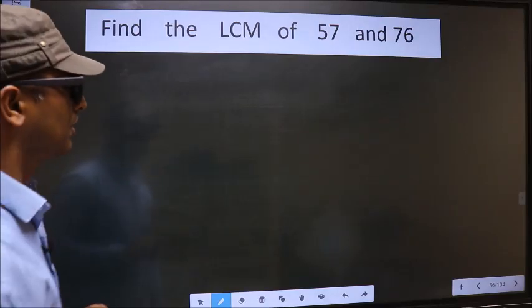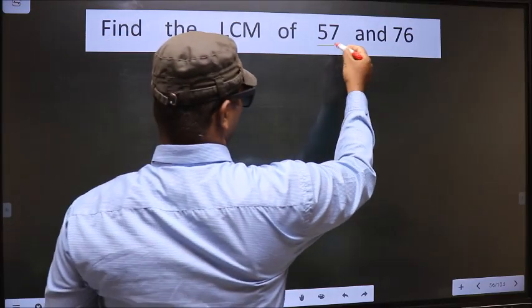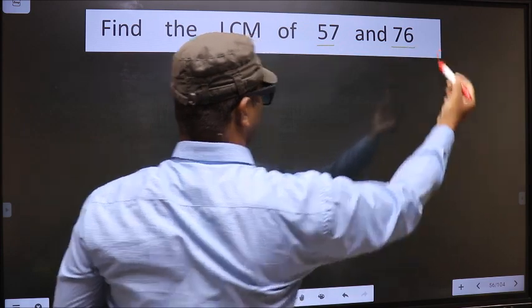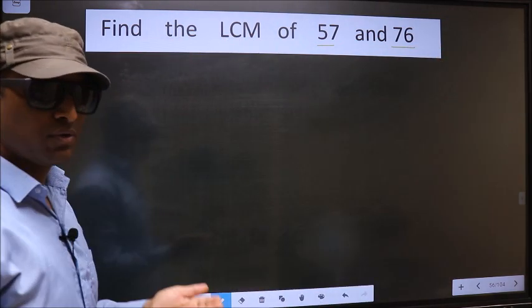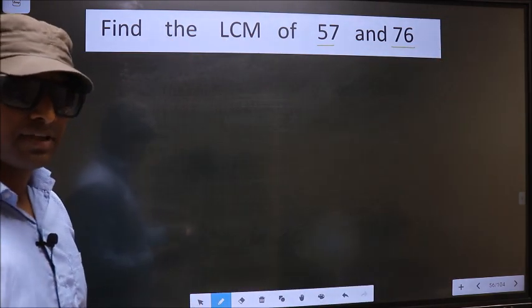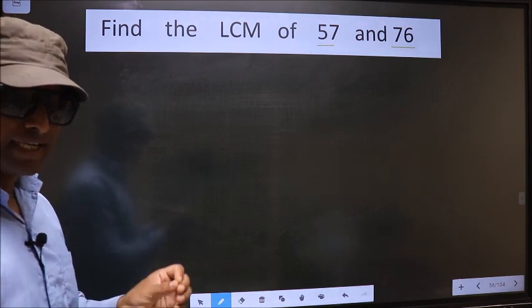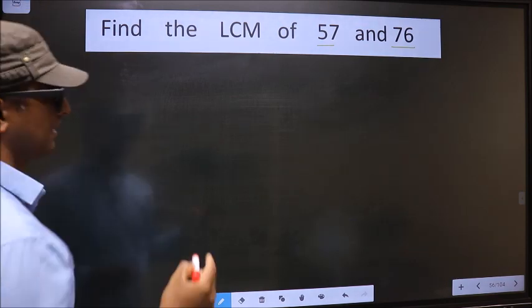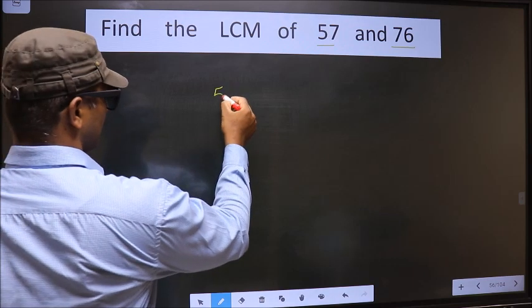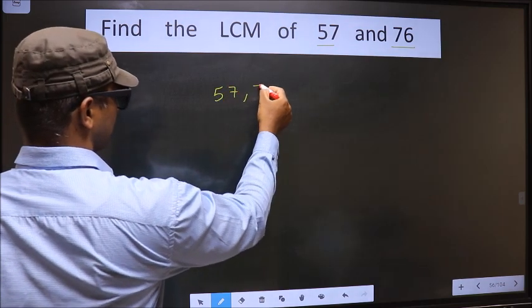Find the LCM of 57 and 76. To find the LCM, first we should frame it in this way. See, that is 57, 76.